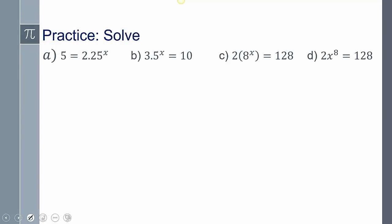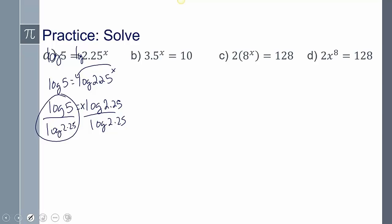Alright, so I want you guys to go ahead and practice and solve. Go ahead and pause here and work on a few of these, and I'll go over them. So let's talk about it. For this first one here, if you do log to both sides, you should get log 5 equals log 2.25 to the x. We can move that x to the front. So you get log 5 equals x log 2.25. And then divide both sides by log 2.25. That's what you would enter in your calculator for part b.